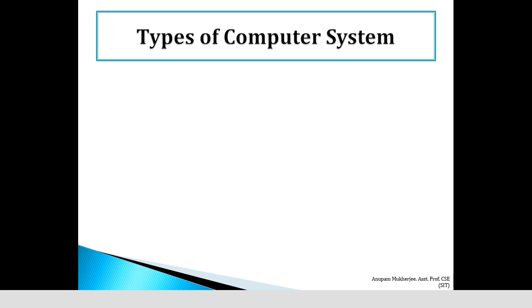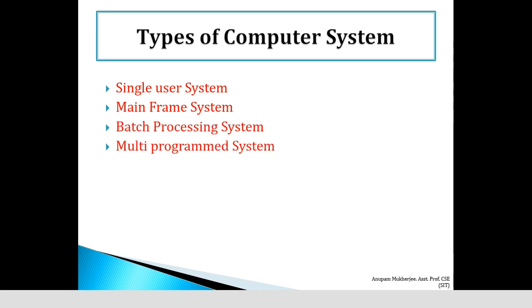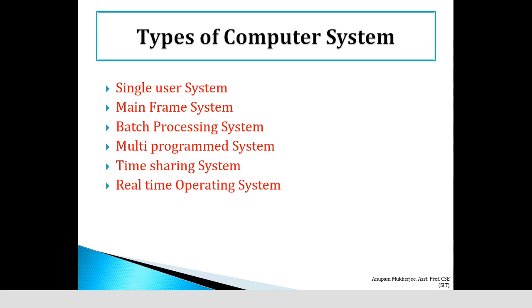Next I will focus on the different types of operating systems. In that section we will discuss single user operating systems, mainframe systems, batch processing systems, multiprogrammed systems, timesharing systems, and finally real-time operating systems.